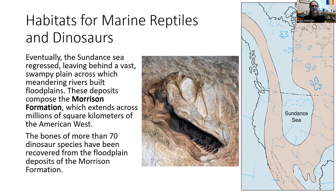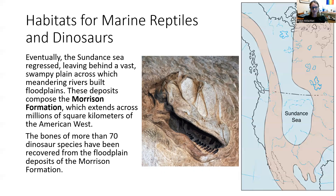Eventually, the Sundance Sea regressed as sea levels fell, and it left behind a wet swampy plain with a lot of rivers flowing through it. During this time, the Morrison Formation was created — a rock formation that extended across millions of square kilometers across the American West, created during a swampy post-epicontinental sea period.